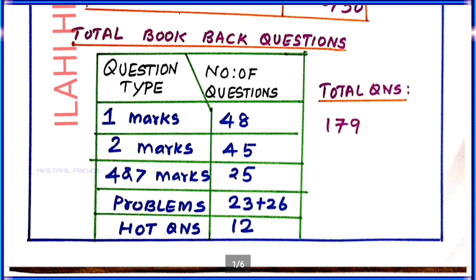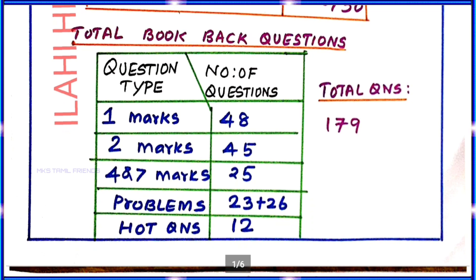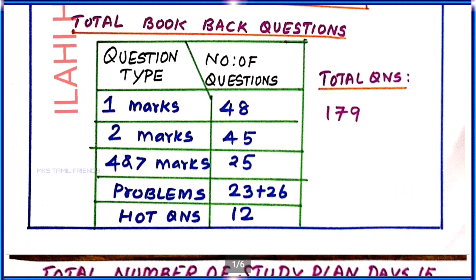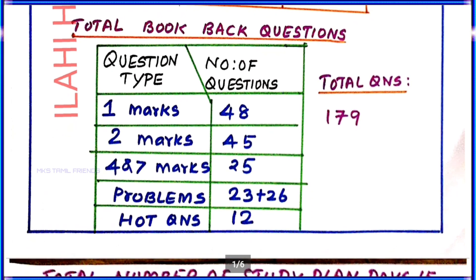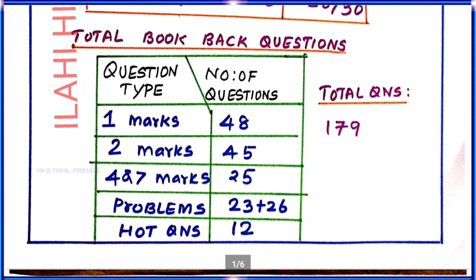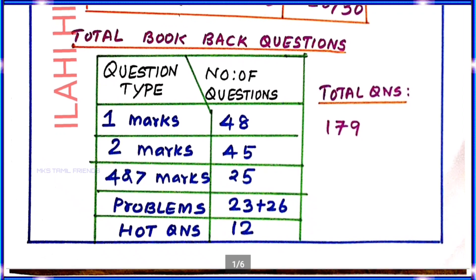Now let's look at the total book question pool. Question types: 1 Mark — 48 questions, 2 Marks — 45 questions, 4 Marks and 7 Marks — 25 questions. There are also 23 plus 26 hard questions, totaling 12 questions. The total question count is 179. This is the actual breakdown of the study plan.